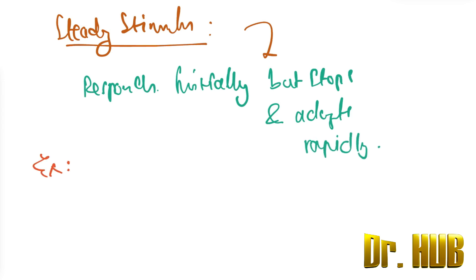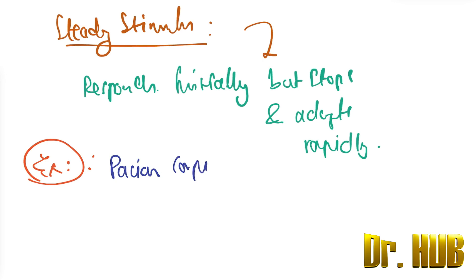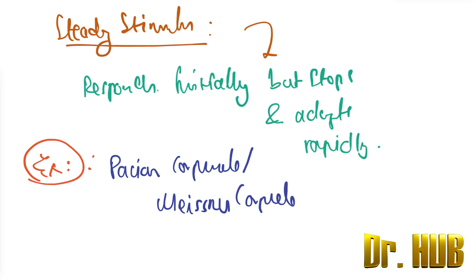The examples of rapidly adapting receptors — this is very important — are the Pacinian corpuscles, the Meissner's corpuscles, and the hair end organs.